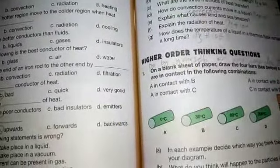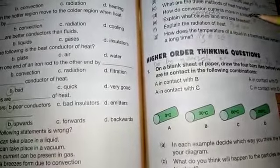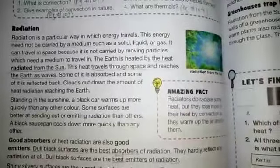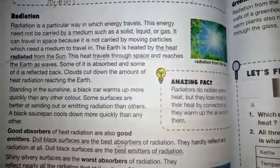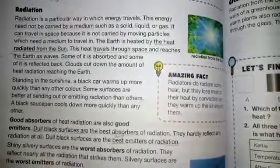The next question is: explain the radiation of heat. Page number 104. Answer is: radiation need not be carried by a medium, it can travel in space. The heat radiated from the sun travels through space and reaches the earth as waves. Some of it is absorbed and some of it is reflected back.